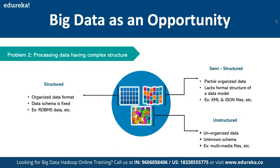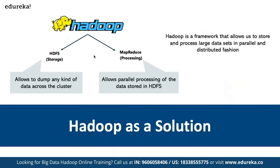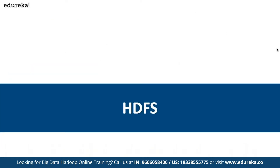Hadoop has been offered as a solution. Hadoop allows us to dump any kind of data across a cluster. Hadoop has two main core components: HDFS, which refers to the Hadoop Distributed File System, and MapReduce, which handles processing — allowing us to parallelly process data stored in HDFS. MapReduce is also used in combination with technologies like Spark, which provides access to real-time stream processing.